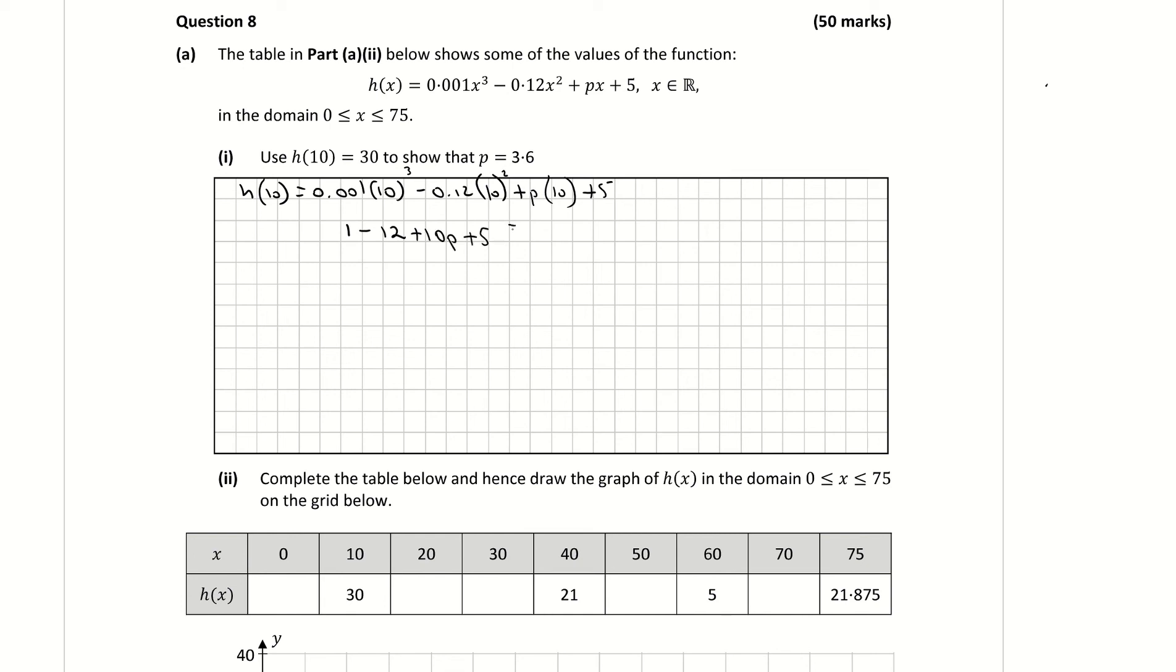We know that our value here must equal to 30. And 1 take away 12 plus 5 is minus 6 plus 10p is equal to 30. Adding 10 to both sides, 10p is equal to 36. Dividing across by 10, 36 divided by 10 is giving me a value of p of 3.6. And that's what they wanted us to do there, to show in part A.